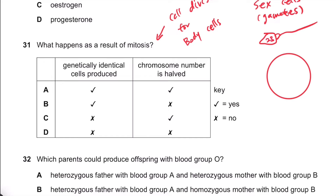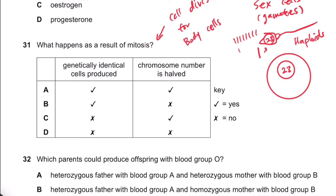Sex cells have 23 chromosomes inside — for humans, of course. They are called haploids because they don't have pairs of chromosomes. They only have single sets of chromosomes, so there are 23 chromosomes like this. Same goes for the egg.